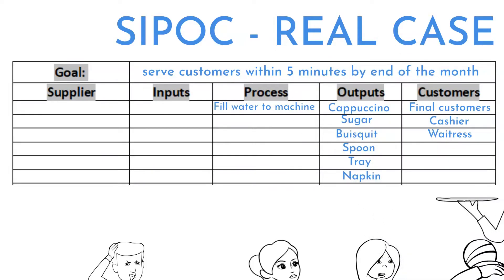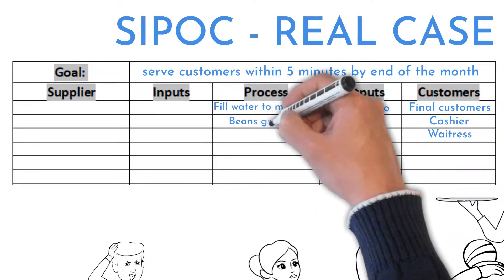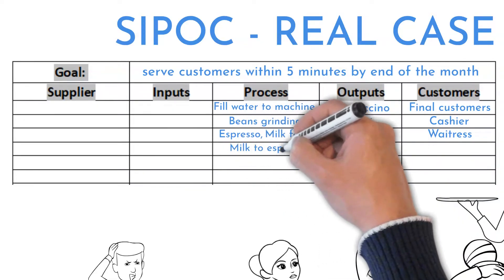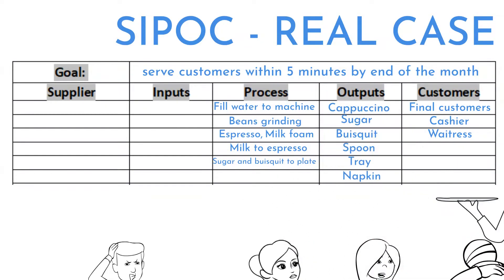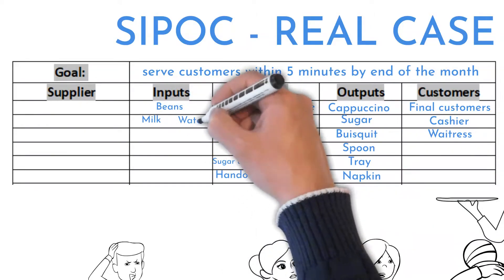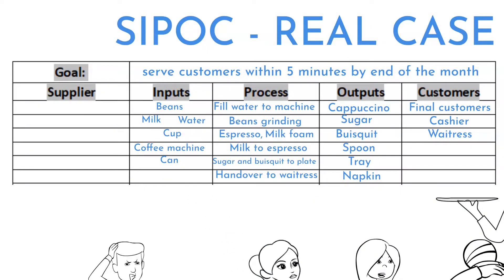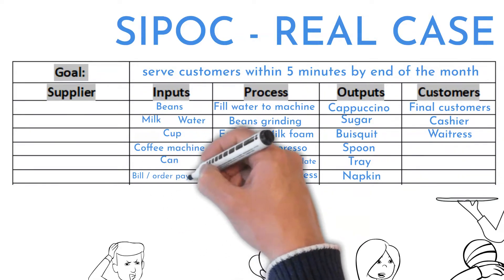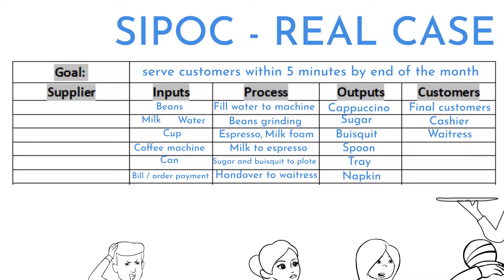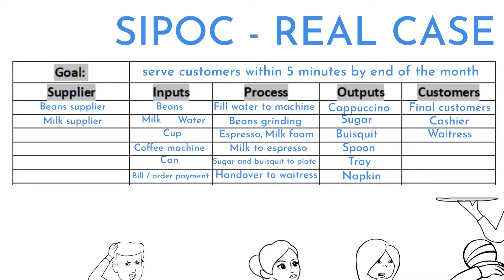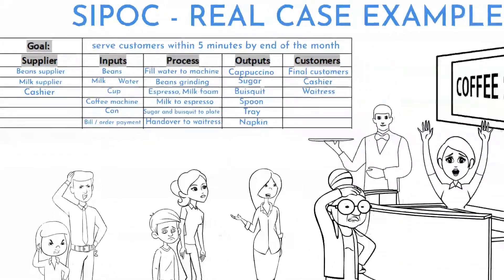The process starts by filling water to the machine, continues with beans grind, espresso making, milk foam creation, pouring milk to espresso, adding sugar, and putting a biscuit on the plate — and finally, handing over to the waitress. Inputs required to make coffee are: coffee beans, milk, water, cup, machine, and the can. A paid order is also a required input — coffee will not be made without it. And the list of suppliers delivers all important things; the cashier is a supplier too, because they inform about the paid order.